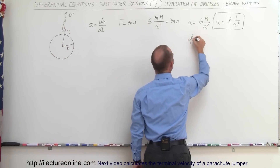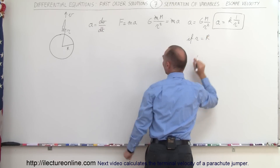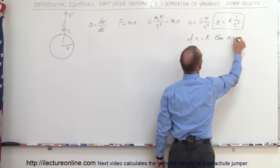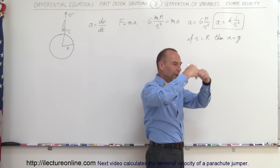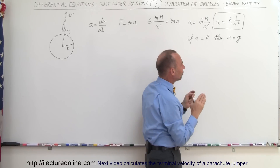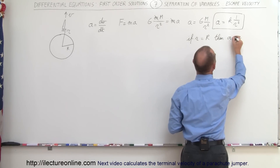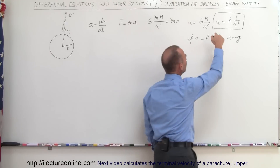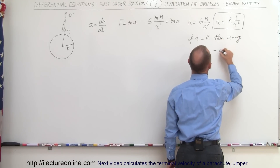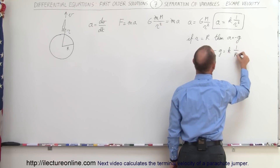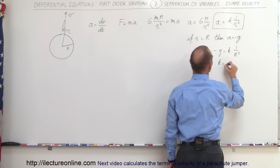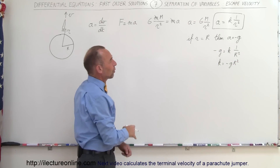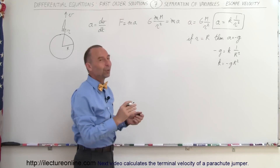If the distance R is equal to the radius of the Earth — big R being the radius of the Earth — then A is equal to g. Since gravity is directed towards the Earth, that would be the negative direction, so we put negative g, negative 9.8 meters per second squared. Plugging that in, we can solve for K: minus g equals K times 1 over R squared, so K equals minus g times R squared. Or we can say it's positive g times R squared if we let g be negative 9.8 — either way will work.